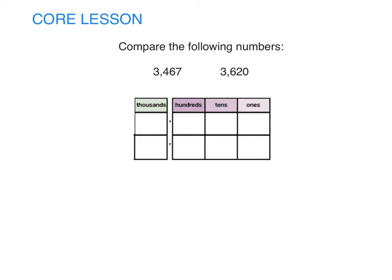Now let's compare these two numbers. Remember we're using the place value chart to write each digit before we compare. 3,467 has three thousands, four hundreds, six tens, and seven ones. 3,620 has three thousands, six hundreds, two tens, and zero ones.